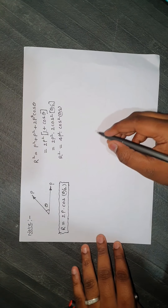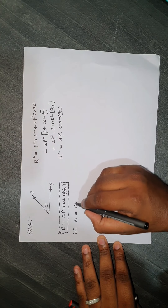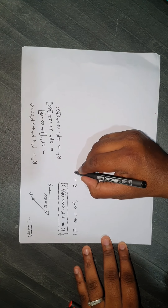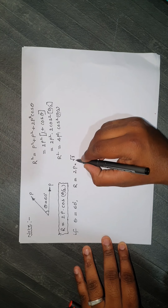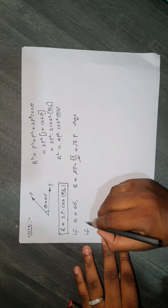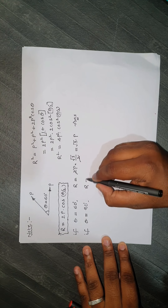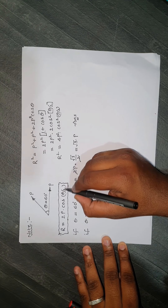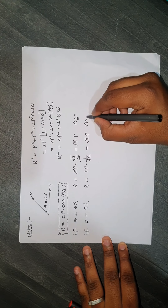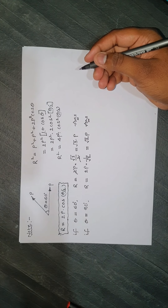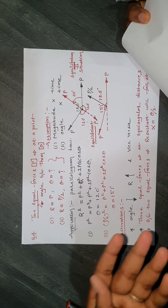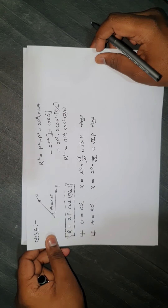This formula was asked in GATE for two marks. If theta = 60°, R = 2P·cos(30°) = 2P·(√3/2) = √3·P. If theta = 90°, R = 2P·cos(45°) = 2P·(1/√2) = √2·P. Keep in mind that assumptions and observations vary from person to person — this note point is important to remember.